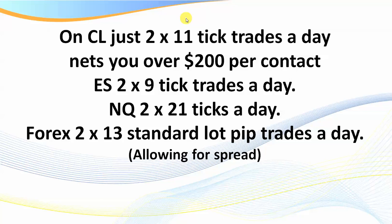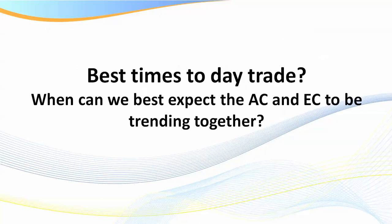For the ES using a 550 tick, targeting previous swing highs/lows, two 9-tick trades a day will net you around $200. The NQ is the same. For Forex, two 13-pip standard lot trades a day — even allowing for a 3-pip spread — nets around $200 a day. I'm not going into full risk parameters here, but never risk more than 2%. When you have a very clear written goal this makes a big difference to your trading when you really know where you're heading.